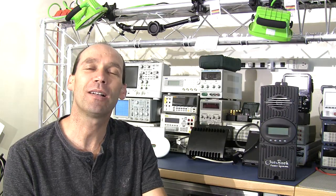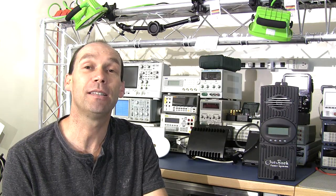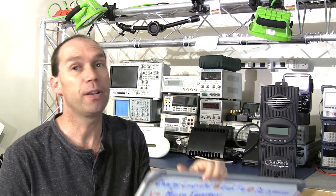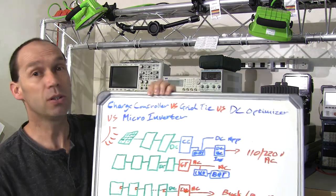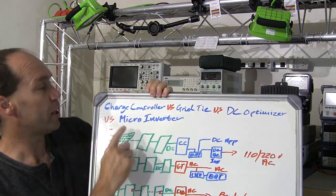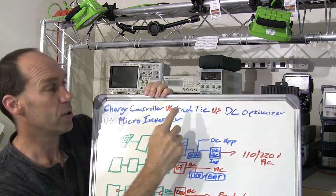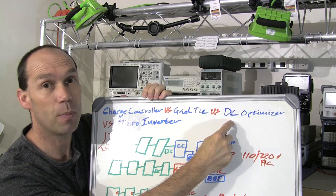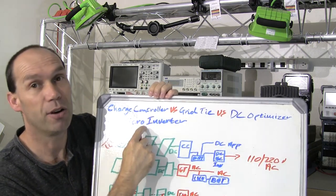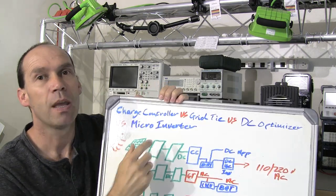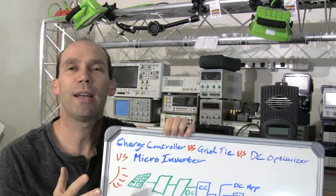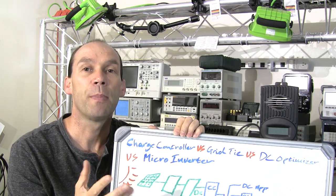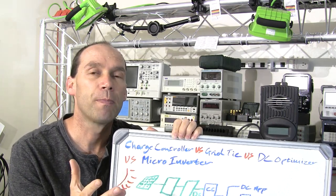Hello YouTubers and welcome to the next in the series on solar power. In this video we're going to concentrate on looking at charge controllers versus grid tie versus DC optimizers versus micro inverters, and try to understand where they fit, the pros and cons, and things you need to look out for.